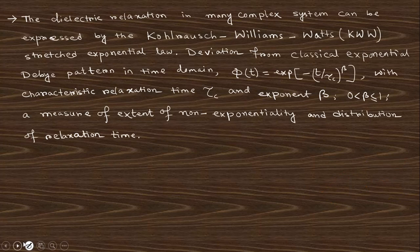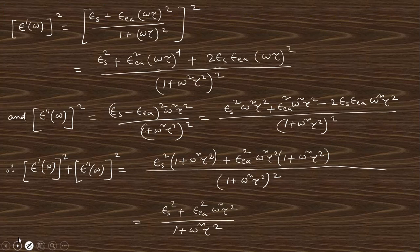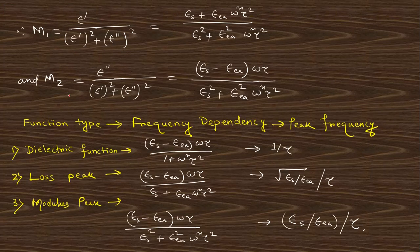Dielectric relaxation in complex systems can be expressed by the Kohlrausch-Williams-Watts (KWW) stretched exponential, representing deviation from the classical exponential Debye behavior. Now, the dielectric modulus — analogous to the mechanical modulus — is known as the dielectric modulus. Its expression is the reciprocal of the dielectric constant (1/ε*). Calculating this gives the expression for the real part of the dielectric modulus.